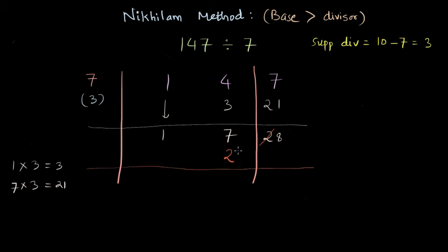And now, because we have gotten this 2 in the central part, we will again multiply this 2 with the supplement divisor 3. So 2 times 3, which is 6, we'll write the result here on the right hand side and on the right hand side, we get 14 and on the central part, we get 19.